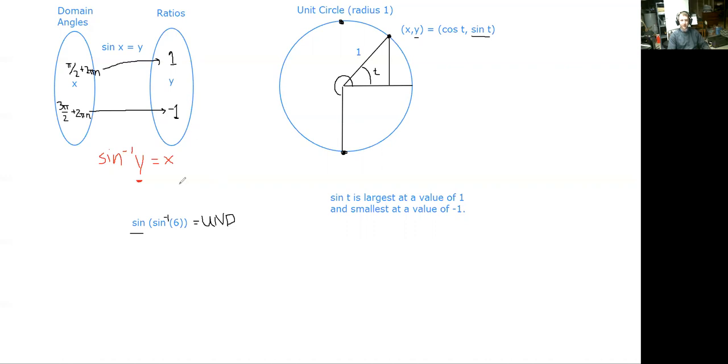So this sine inverse business in this question, this is undefined. Because what angle gives a ratio of 6? That's what this is asking. Right here. This is asking what angle gives us a ratio of 6? And the answer is none. Sine never gives a ratio bigger than 1. So we don't know what this sine inverse of 6 is.